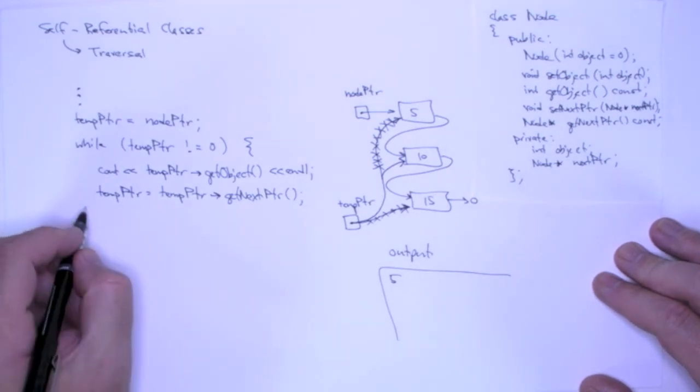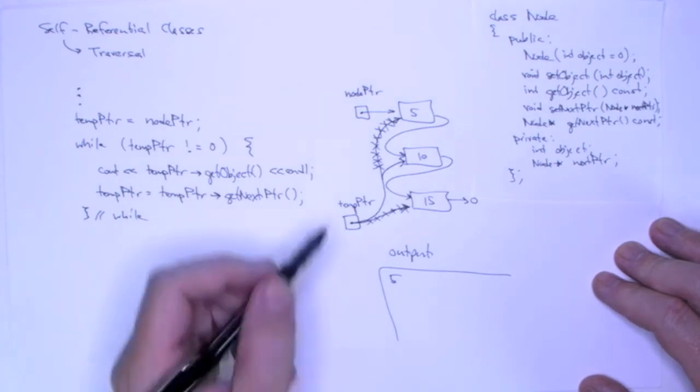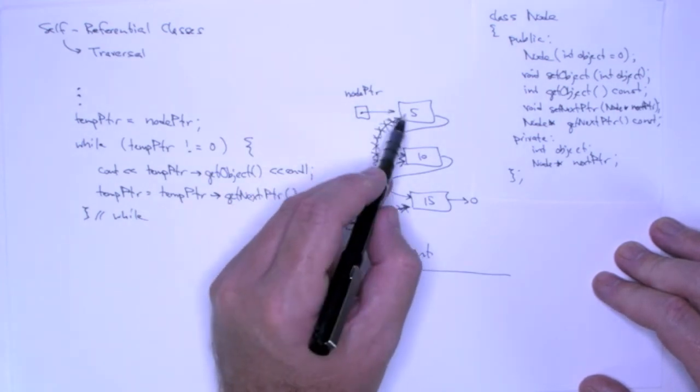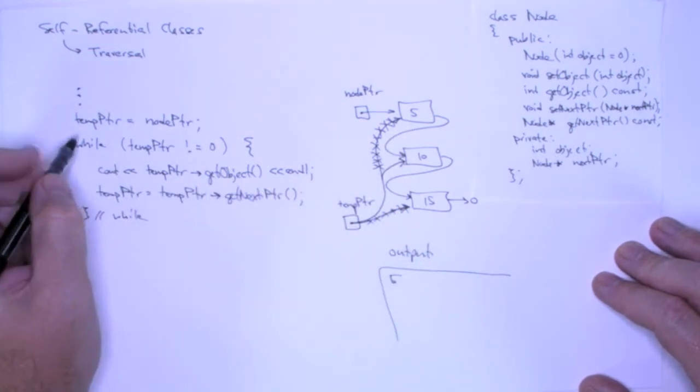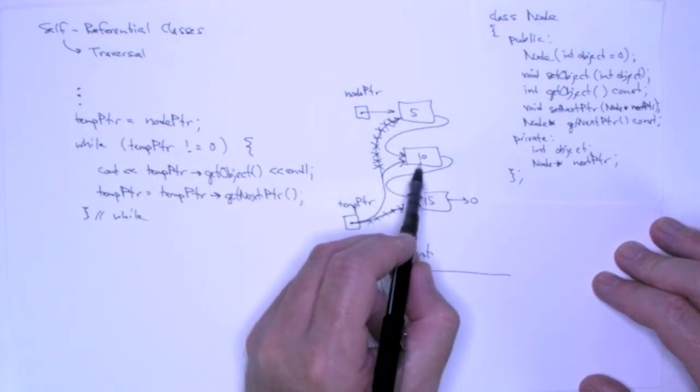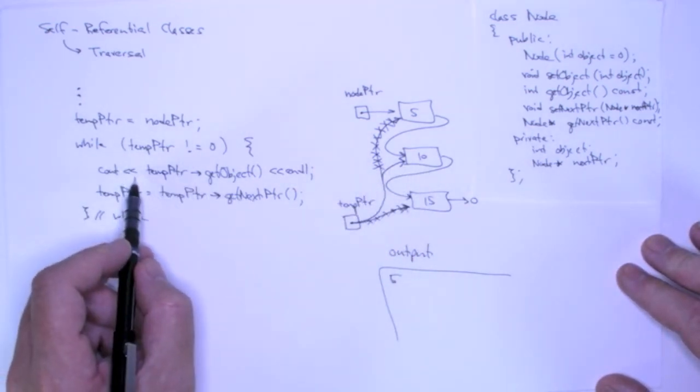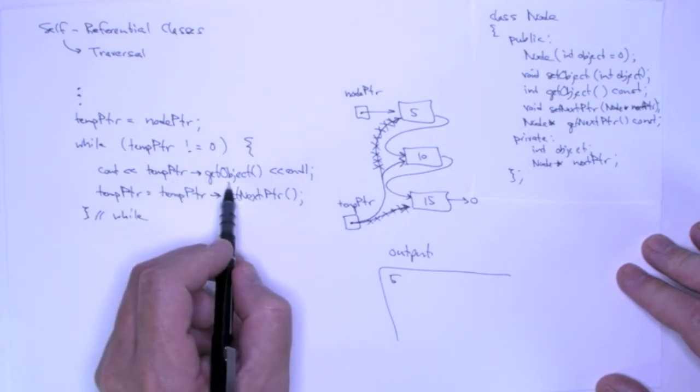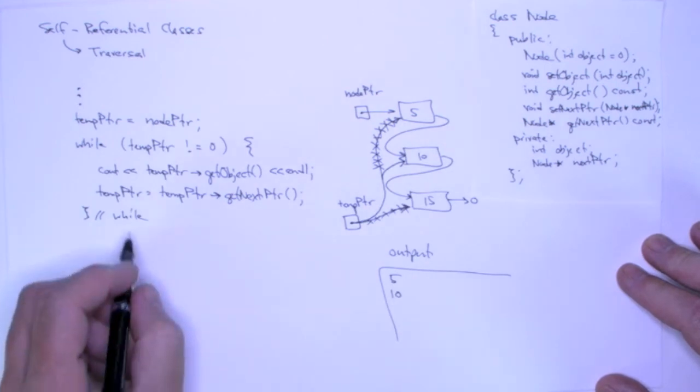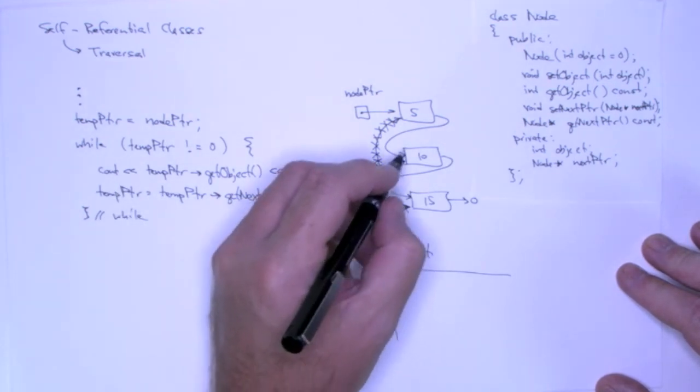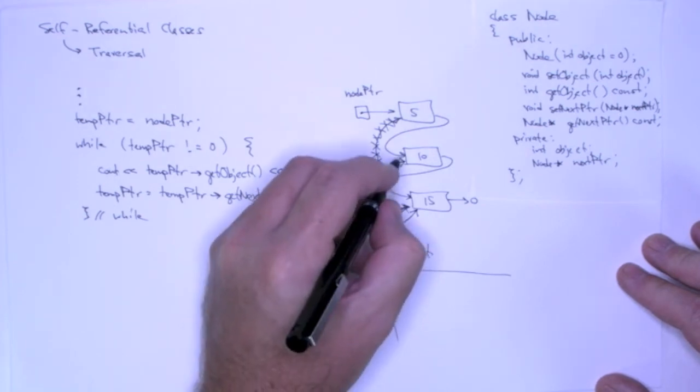And that's the end of my while loop. Because I'm actually in exactly the same situation I was in when I was pointing to five. So I go back to the top of the while loop and I check to see if temp pointer is pointing to something. It does. So I enter the while loop and I print the object ten. And now I advance temp pointer to the next node. So temp pointer is now going to point to 15.